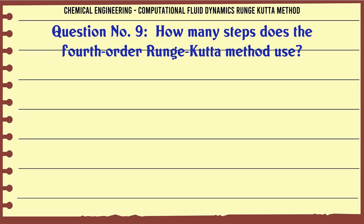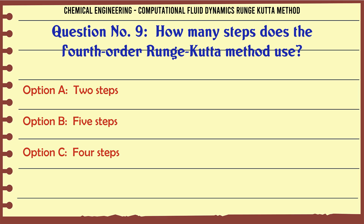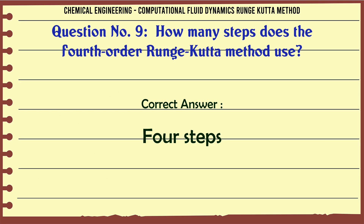How many steps does the 4th order Runge-Kutta method use? A: two steps. B: five steps. C: four steps. D: three steps. The correct answer is: four steps.